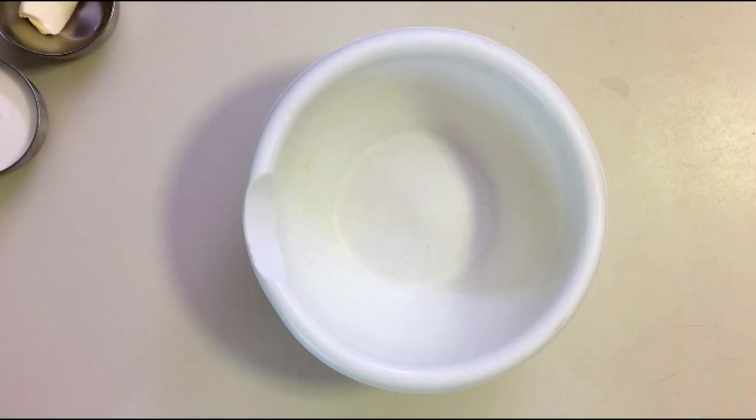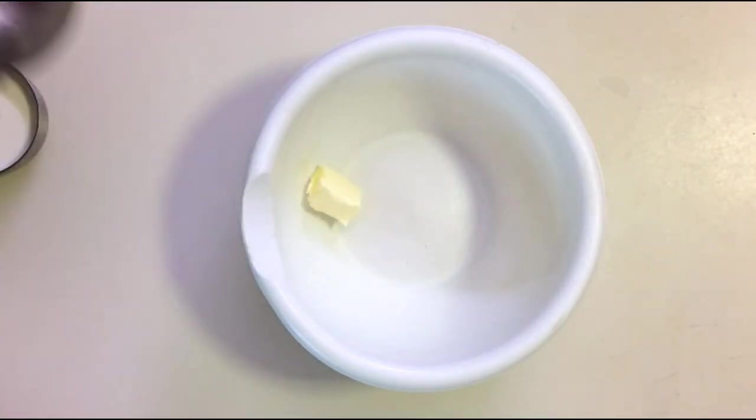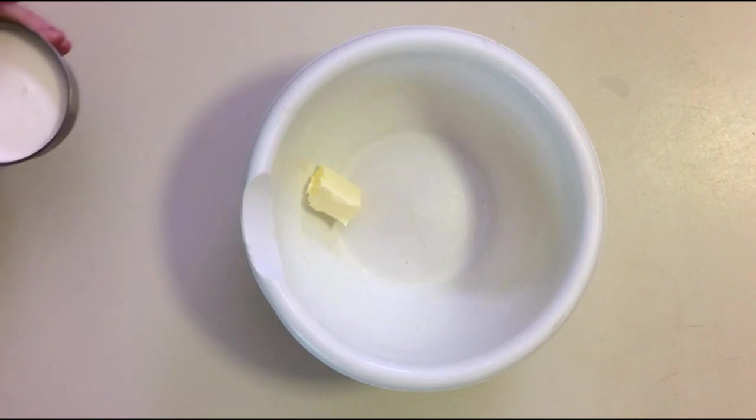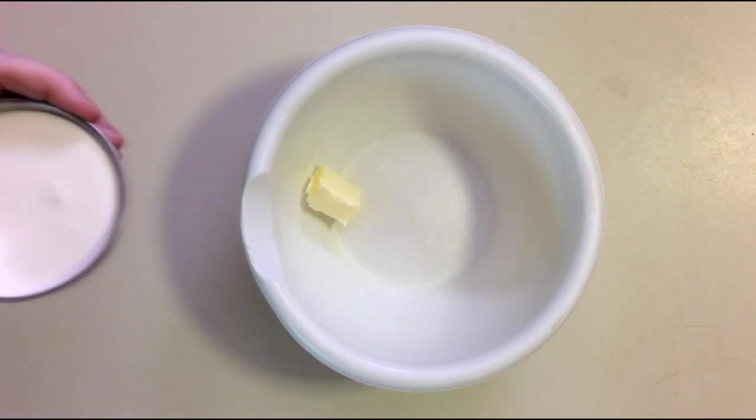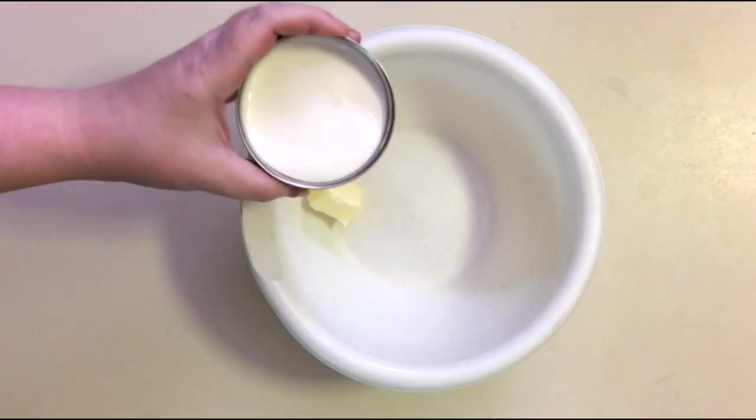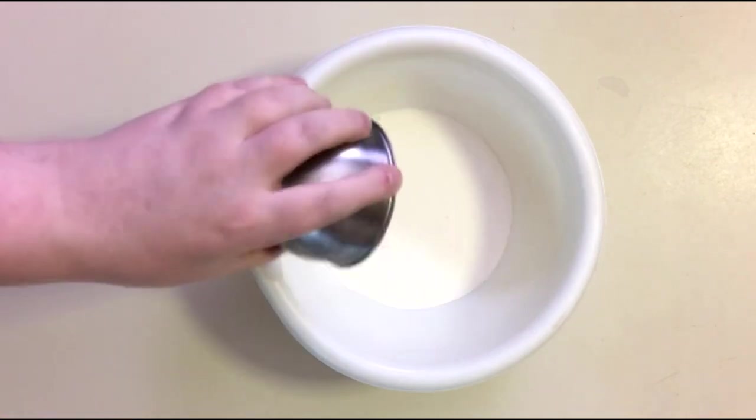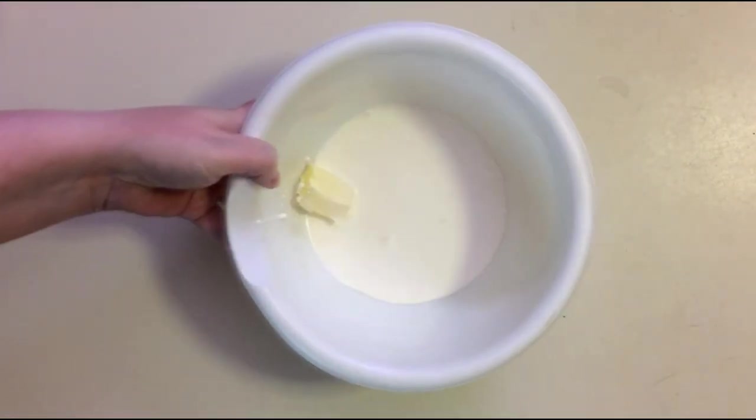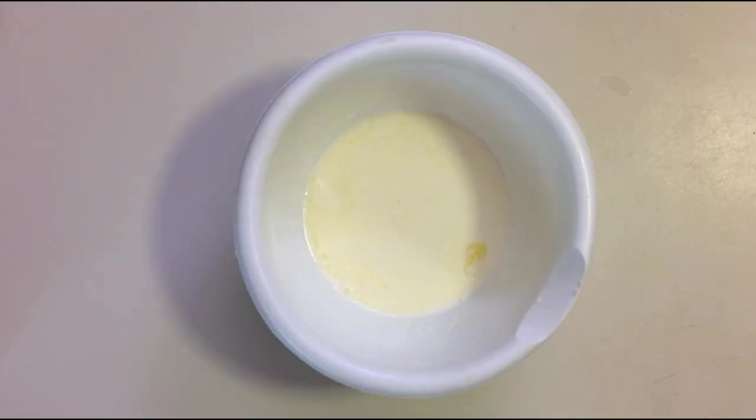So you're going to put your butter into a microwave safe bowl and then add your heavy cream and microwave this for one to two minutes until the butter is melted and the cream is simmering. Be careful it doesn't over boil.